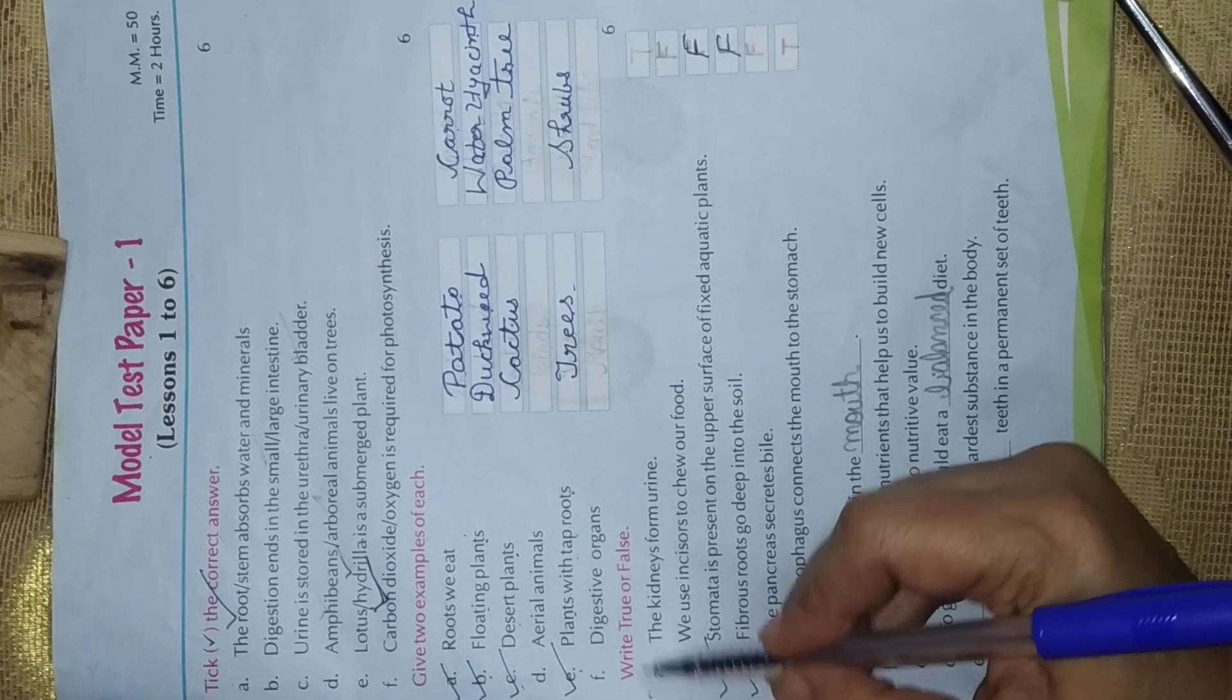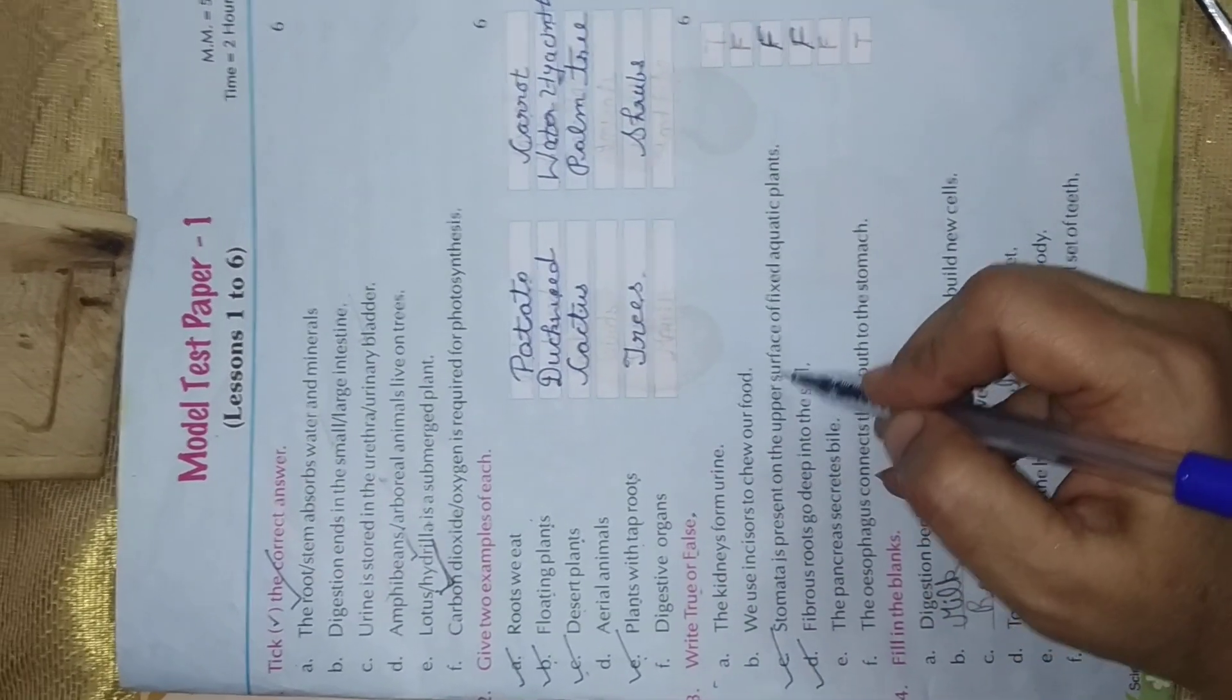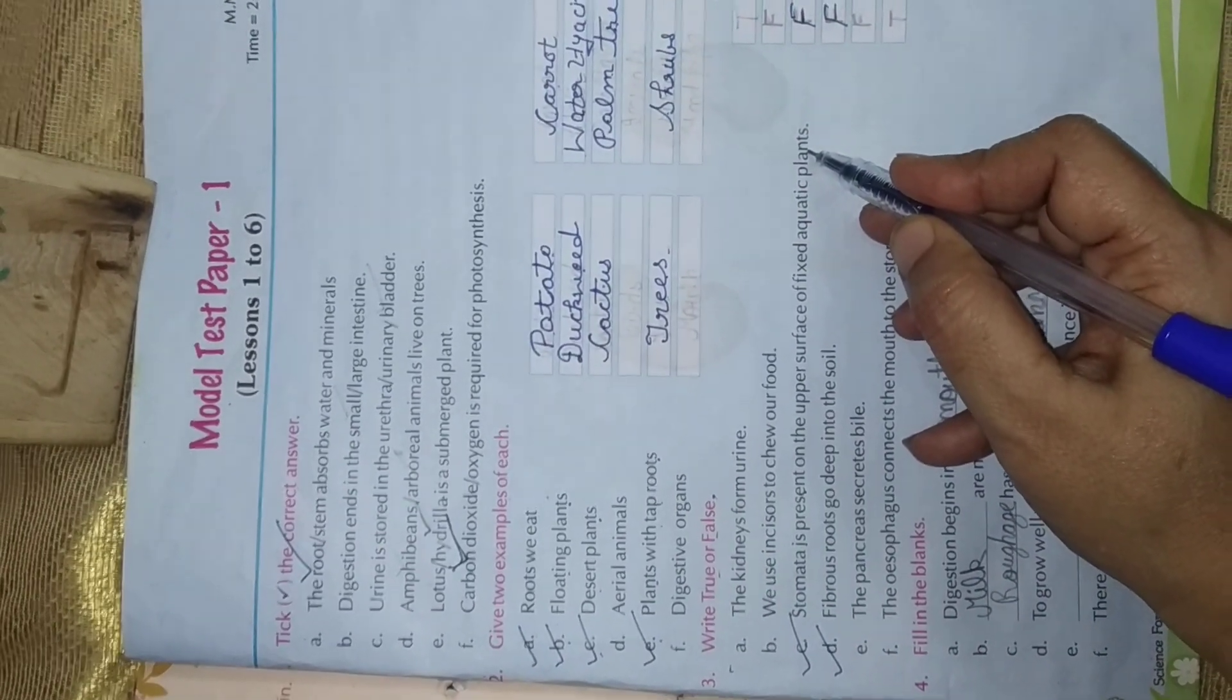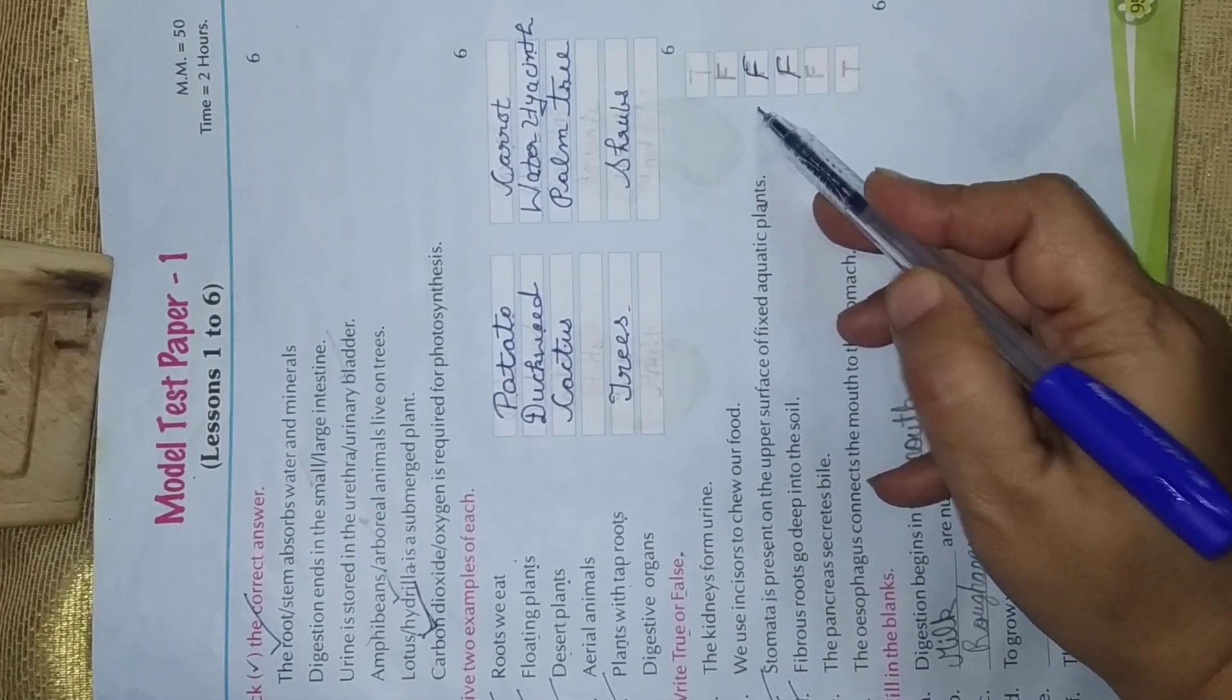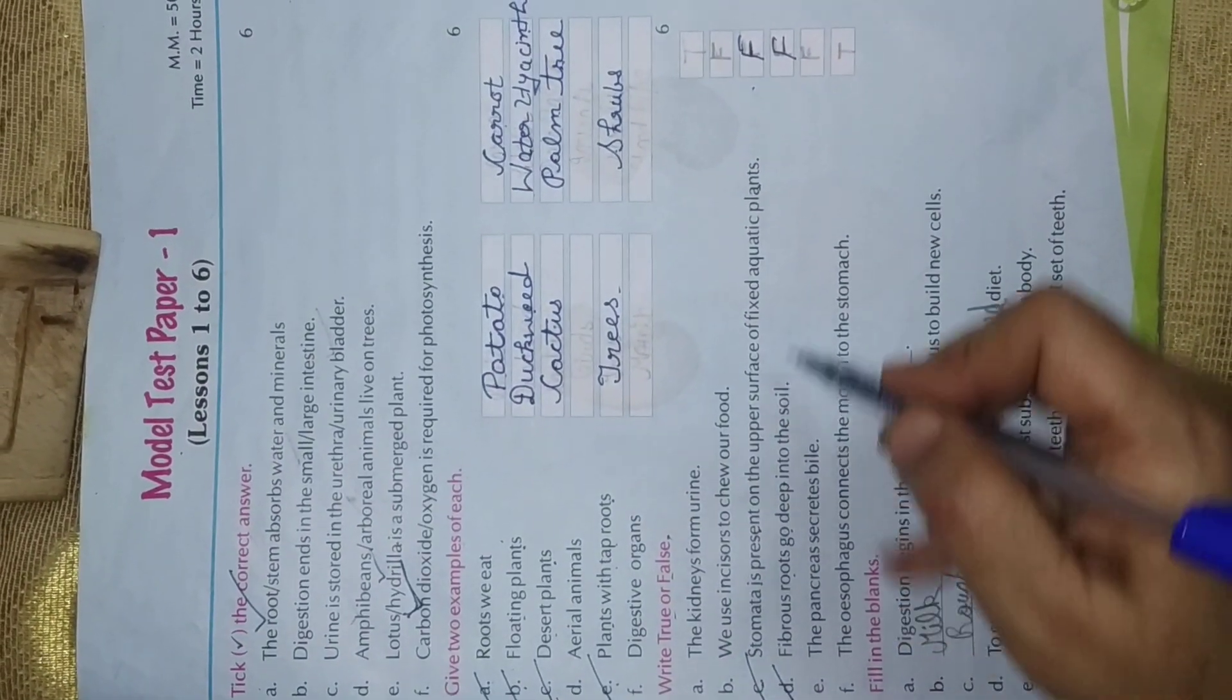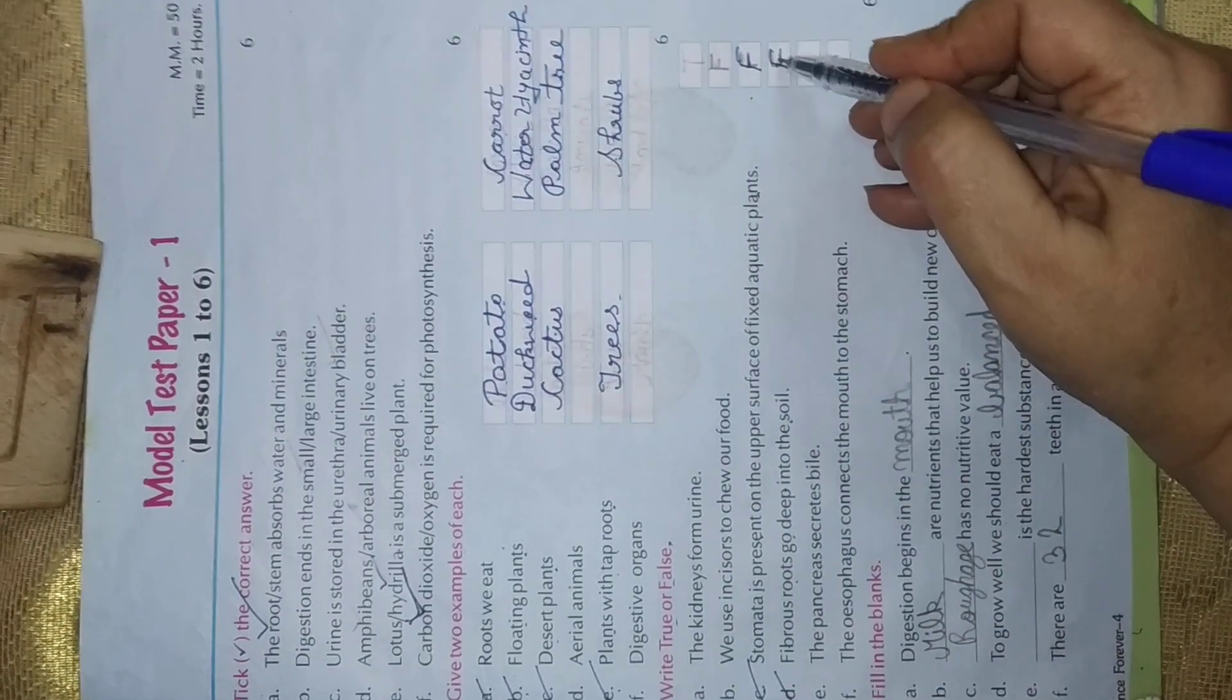Next question. True or false? Part C. Stomata is present on the upper surface of the fixed aquatic plants. It is wrong. No. Stomata is not present on the upper surface of the fixed aquatic plants. Write down false. D. Fibrous roots go deep into the soil. False. Tap roots go deep inside the soil. Write down false.